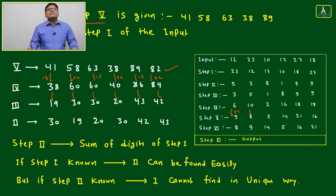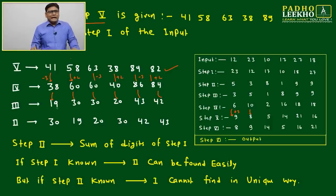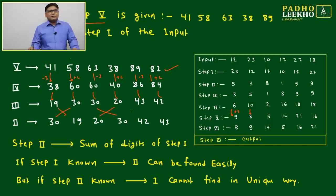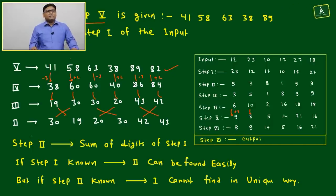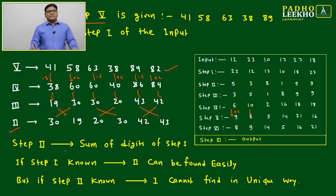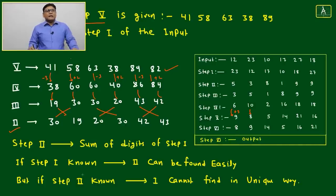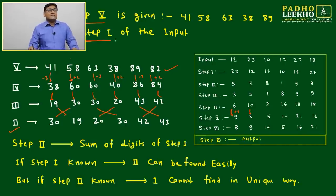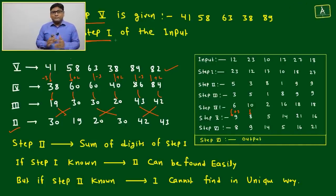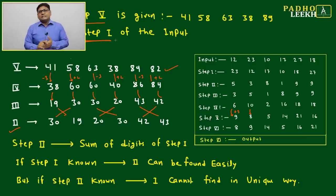Continuing the reverse operation, numbers shift back to their Step 2 positions: 20 shifts here, 43 shifts here, 42 — we got the second step. Step 2 is the sum of digits of Step 1.